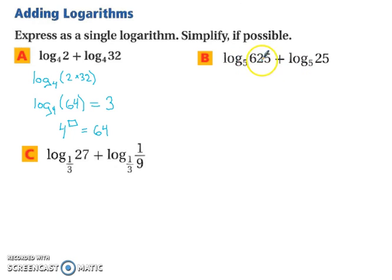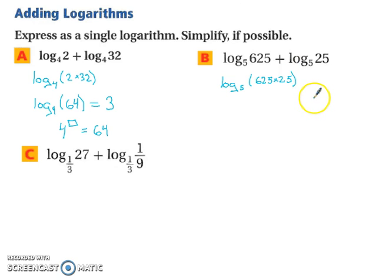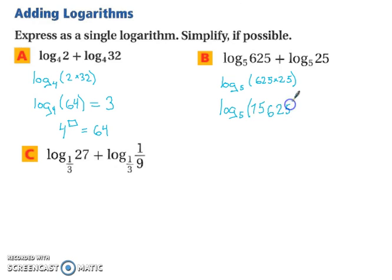Let's try the next one. We have log base 5 of 625 plus log base 5 of 25. This is the same as log base 5 of 625 times 25, which is log base 5 of 15,625. That equals 6, because 5 to the sixth power gives you 15,625.